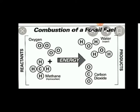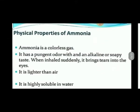Reactants are the substances which react and combine with each other. Products are the substances which are produced as a result of the combination of reactants. The next topic is the making of ammonia, but first we need to understand the physical properties of ammonia, its uses, and its toxic effects.